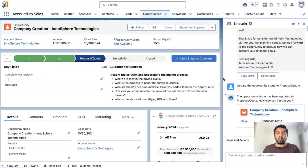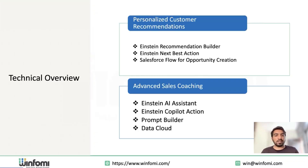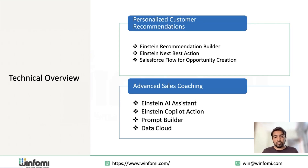Now let's look at the technical overview of each use case and explore which Einstein AI features were utilized. For personalized customer recommendation, the main engine is Einstein Recommendation Builder coupled with Einstein Next Best Action to display products within the account record page. A Salesforce Screen Flow is used to create the opportunity and add the product under it. For advanced sales coaching, we utilized the Einstein AI Assistant as a conversational AI, along with Einstein Copilot actions — both standard and custom — using prompt builders. We also utilized the Data Cloud to store website activity data to be retrieved and sent to the LLM models.